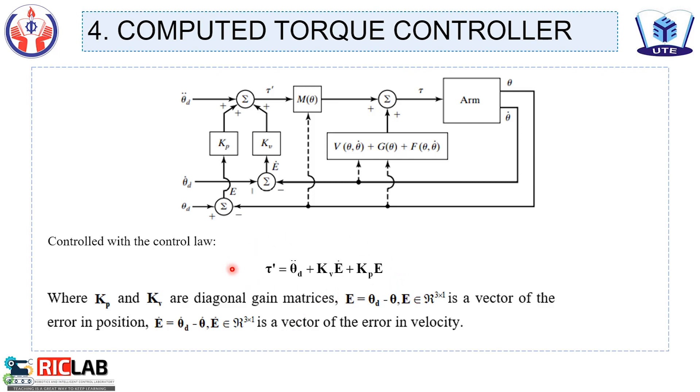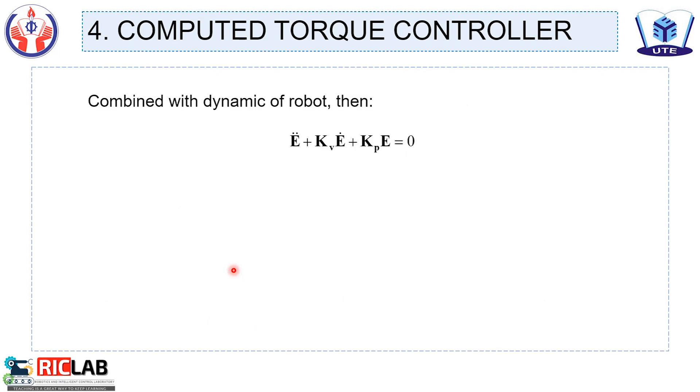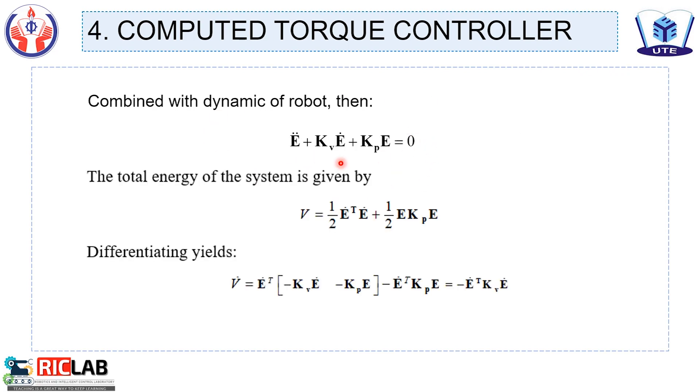After we have the controller, we proceed to prove the system is stable. Combine with the dynamics of robots, then we have the equation like that. The total energy of the system is given by the equation as follows.